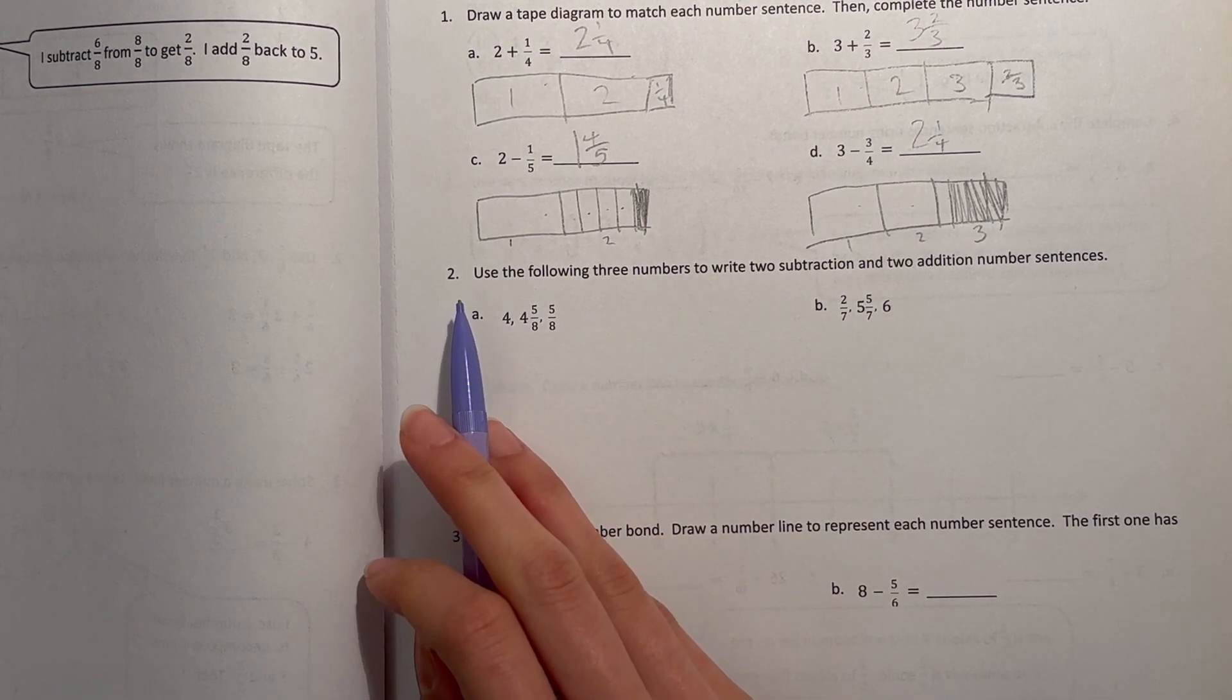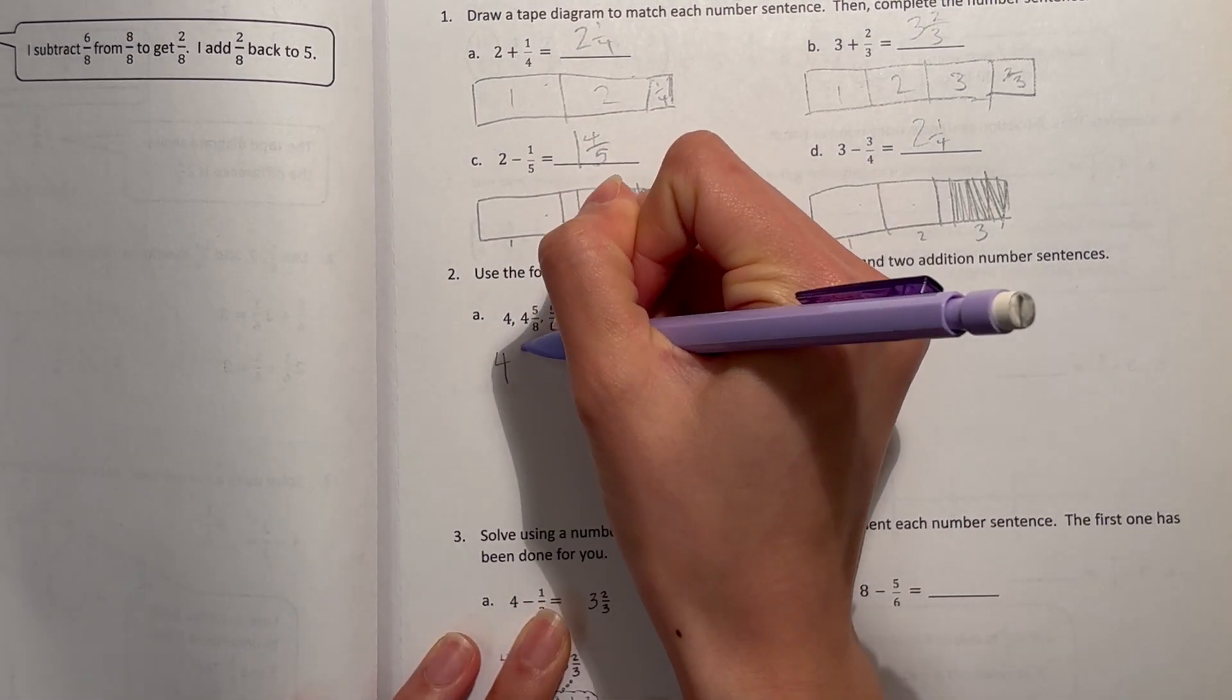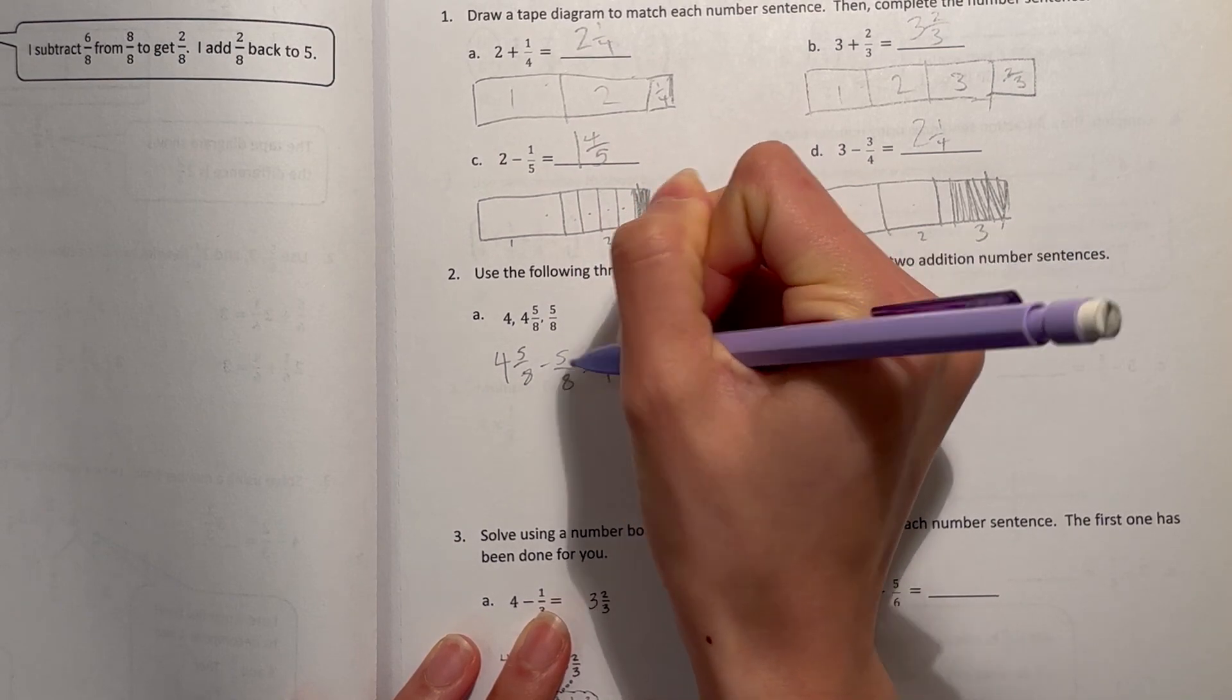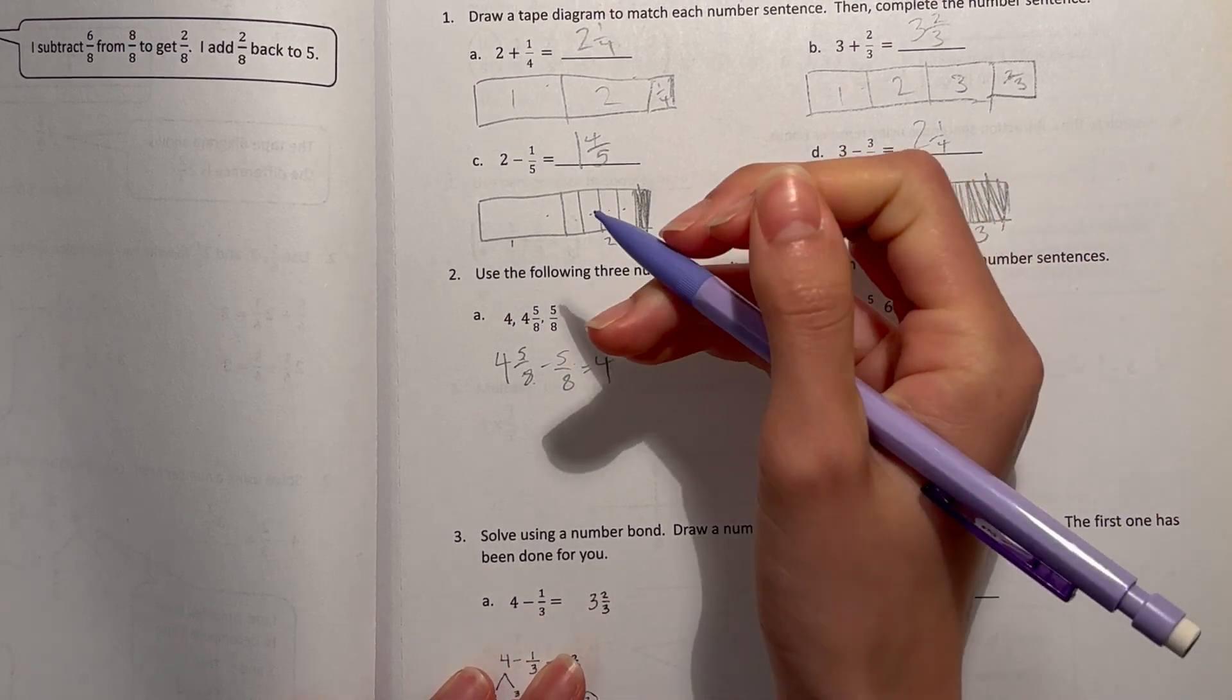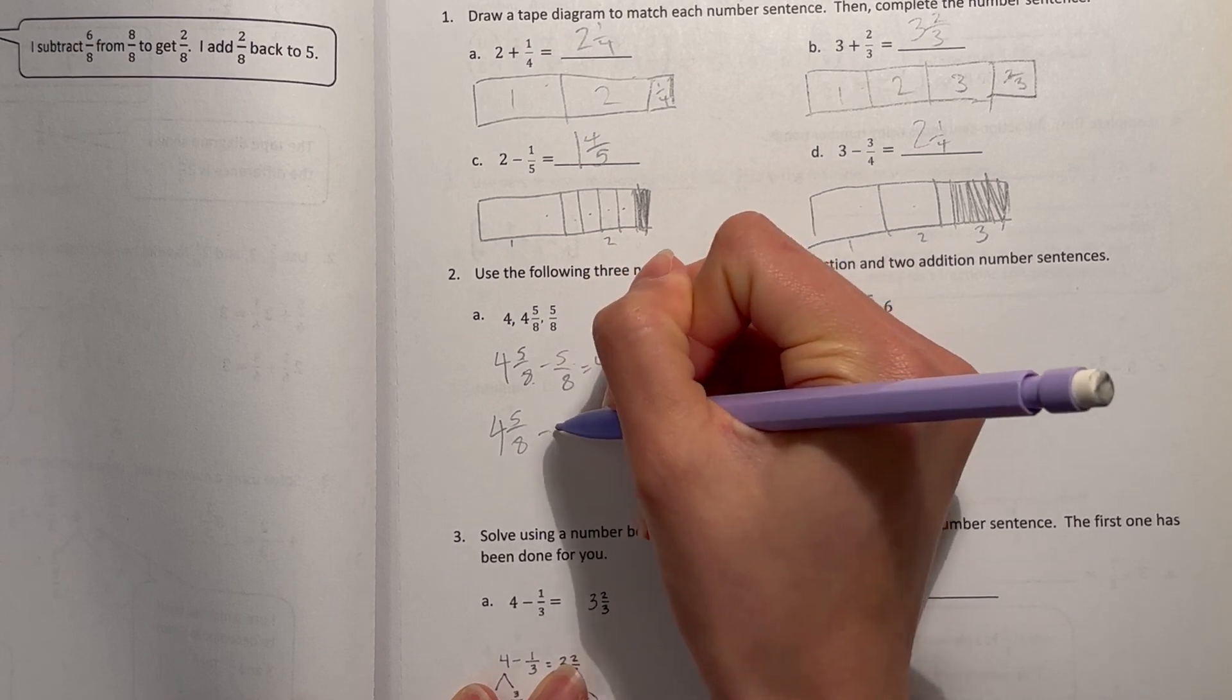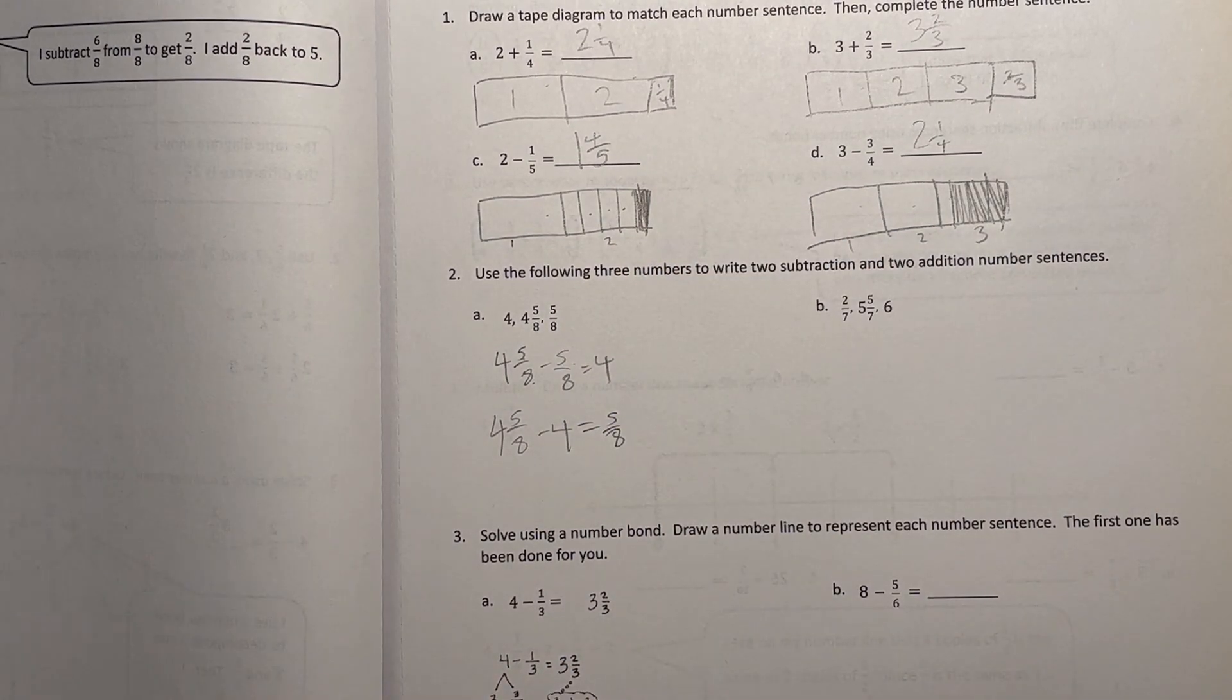So obviously for the subtraction, we know 4 and 5 eighths minus 5 eighths is 4. But when you write two subtraction problems, the only other one that could work is 4 and 5 eighths minus 4, which will give you 5 eighths.